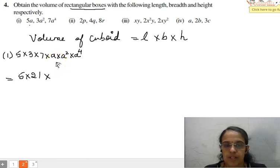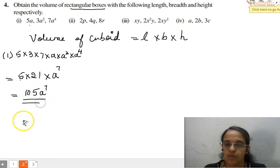When we apply the concept of exponents, here we get A to the power of 4, 5, 6 and 7. We add up all the powers. So this is nothing but 5 times 1 is 5, 5 times 2 is 10. So it is 105 A to the power of 7 is the volume for the first one.